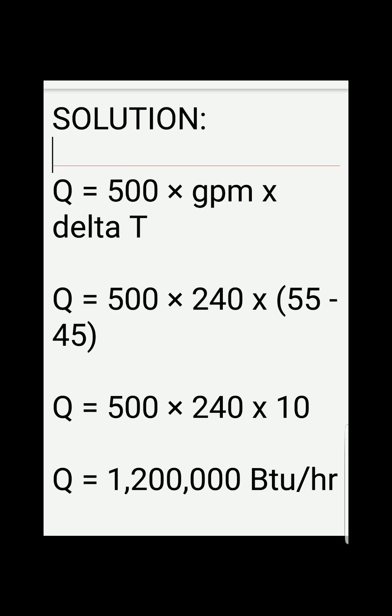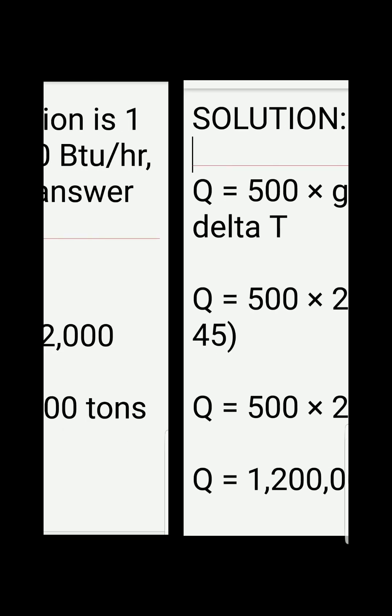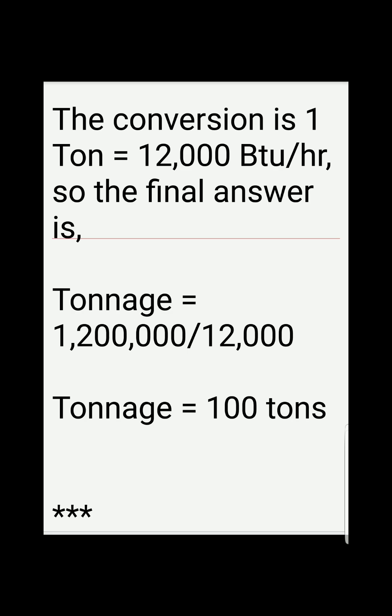Since we are asked about the cooling capacity in terms of tons or tonnage, we need to convert. The conversion factor is: one ton of refrigeration equals 12,000 BTU per hour. So the final answer is 1,200,000 divided by 12,000, which gives us 100 tons.